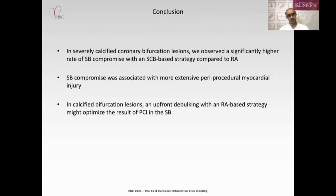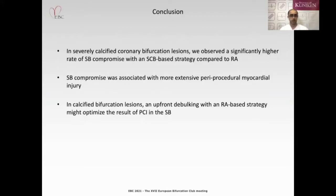In conclusion, in severely calcified coronary bifurcation lesions, we observed a significantly higher rate of compromised side branch in the scoring/cutting balloon group compared to rotational atherectomy. Side branch compromise was associated with more extensive periprocedural myocardial injury. In calcified bifurcation lesions, upfront rotational atherectomy with its debulking effect could optimize the result in the side branch.